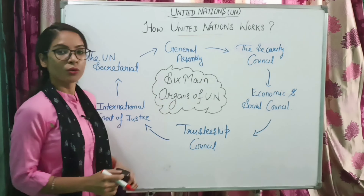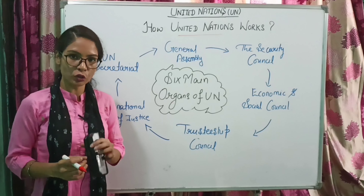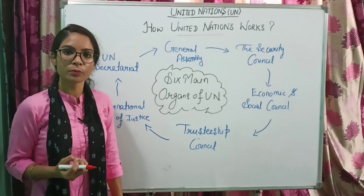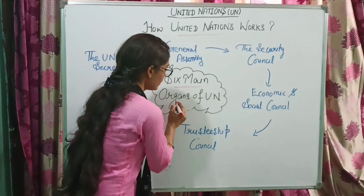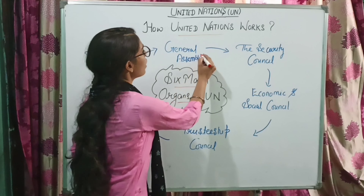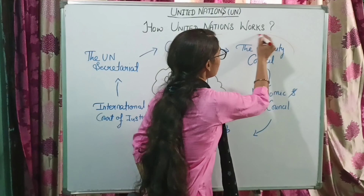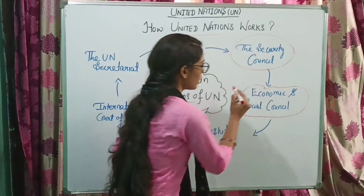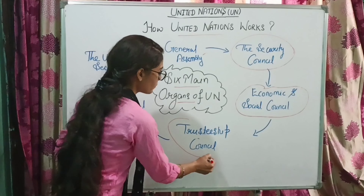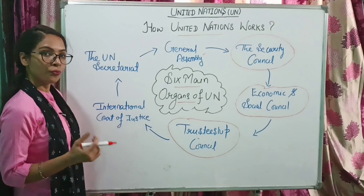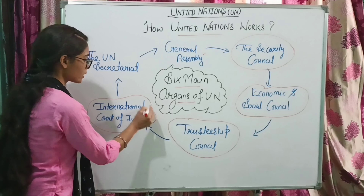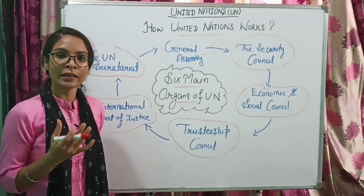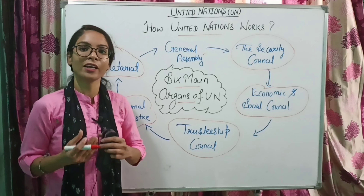How United Nations works: United Nations के total 6 parts हैं, जिनको organs भी बोला जाता है. Six organs हैं mainly United Nations के: First, General Assembly. Second, the Security Council. Third, Economic and Social Council. Fourth, Trusteeship Council. Fifth, International Court of Justice. And the last one is the United Nations Secretariat.